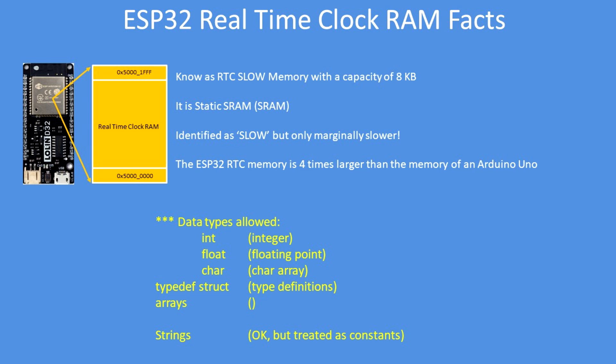You can use integers, floating points, and chars. You can define a structure, use arrays, and use strings — though strings are treated as constants.